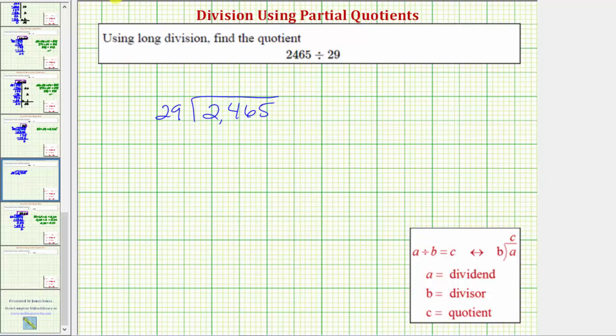To keep our work organized, we'll draw a vertical line to the right of our division problem here. We'll record the partial quotients on the right side.